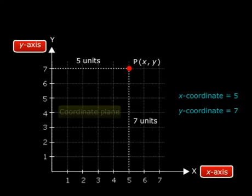And last but not the least, remember that abscissa is another name for the x-coordinate, while ordinate is also another name for the y-coordinate.